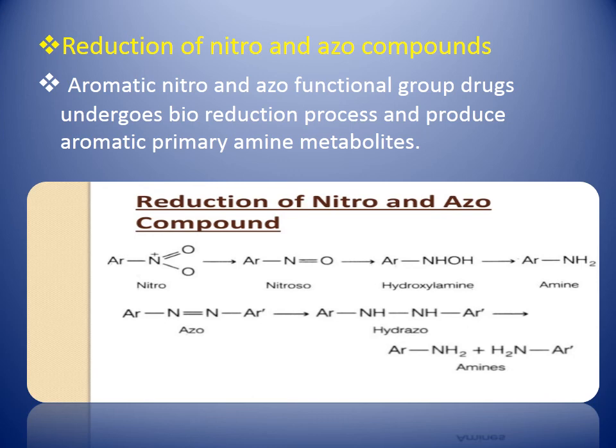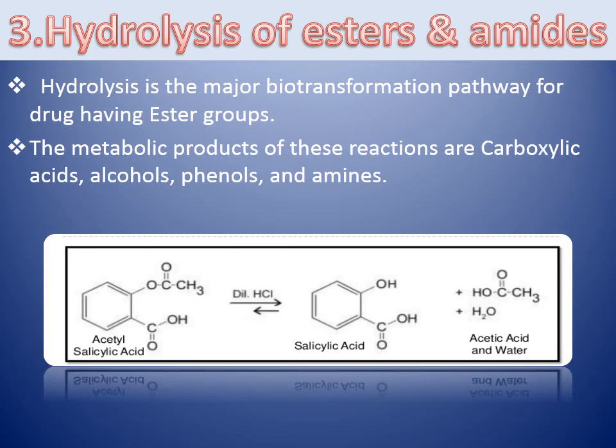Coming to the reduction of nitro and azo compounds. Aromatic nitro and azo functional group drugs undergo bioreduction and produce aromatic primary amine metabolites. The nitro group-containing drug can form nitroso, then hydroxylamine, and then produce amines. The azo group-containing drugs can form hydrazo and then amines. These amines are more water-soluble and can easily be excreted from the body.